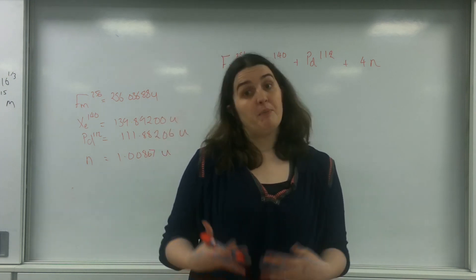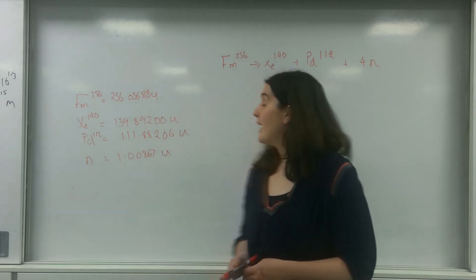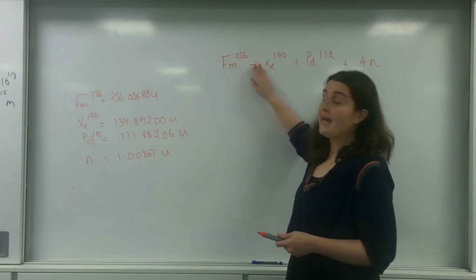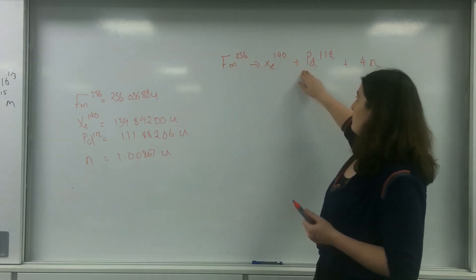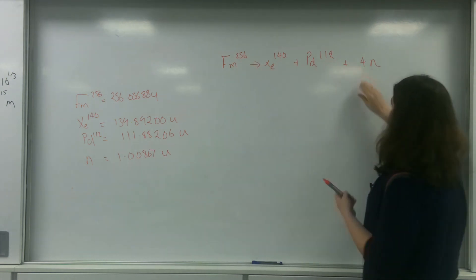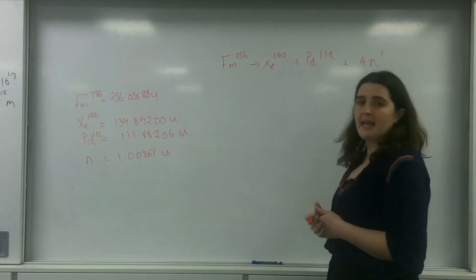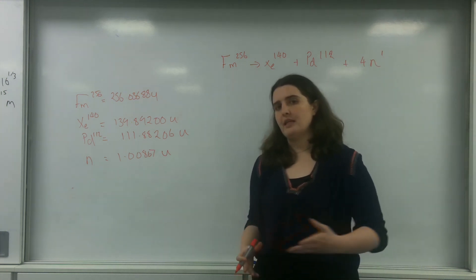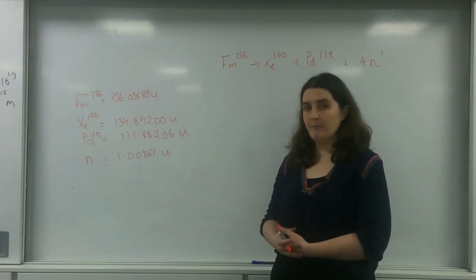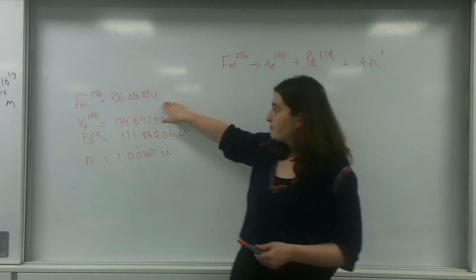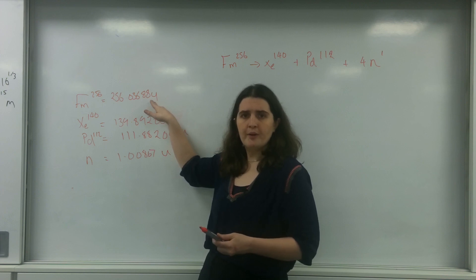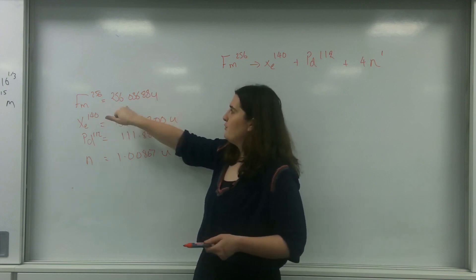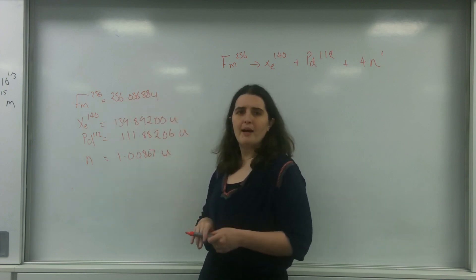I'm going to explain mass deficit by using an example. What I've got here is fermium-256 decaying into xenon-140, palladium-112, and four neutrons. I have information about the masses of these individual atoms, and I've got them here as U. So fermium-256 is 256.03688 U.